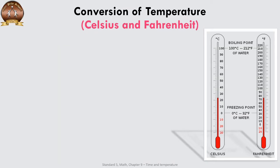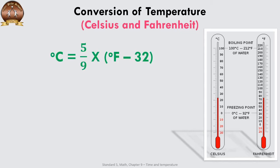Let us learn the conversion of temperature from Celsius to Fahrenheit and vice versa — Fahrenheit to Celsius. The first formula on our screen: when degrees Fahrenheit is given and we have to convert it into degrees Celsius, we use: (5/9) × (°F − 32).